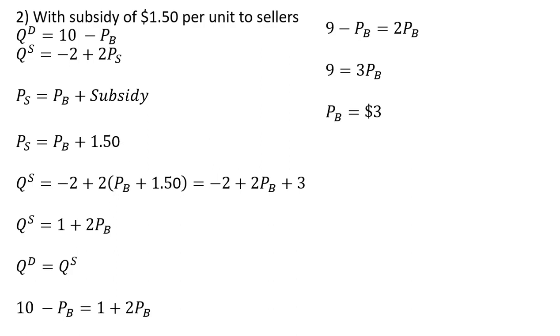So this was less than our equilibrium price in the example without the subsidy. And as for sellers, sellers are going to get the $3 that buyers pay plus $1.50. So sellers clear $4.50 for each unit sold.